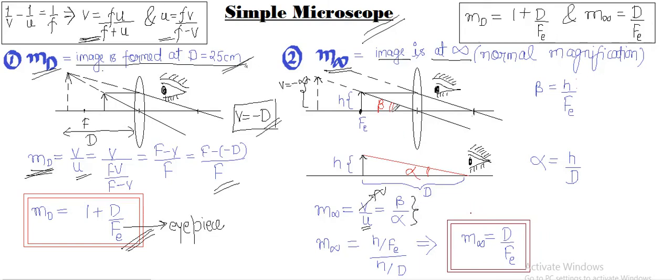So beta here, we can look at this triangle and get it that beta can be written as this height divided by this length using tan beta formula, where beta is supposedly a very small angle. So beta equals to h by fe. Similarly, alpha...